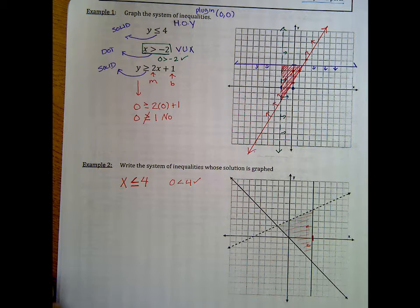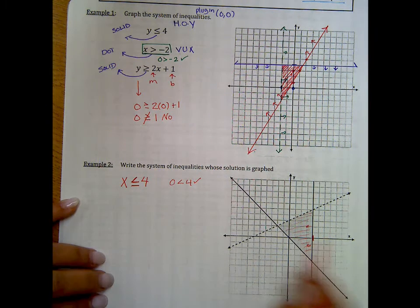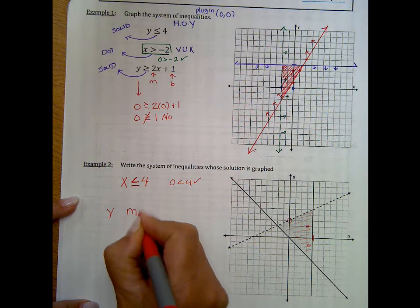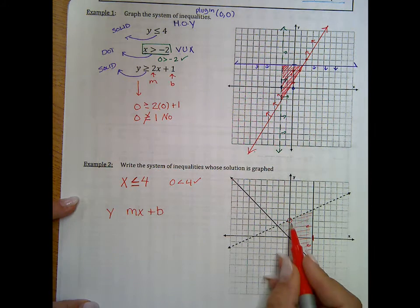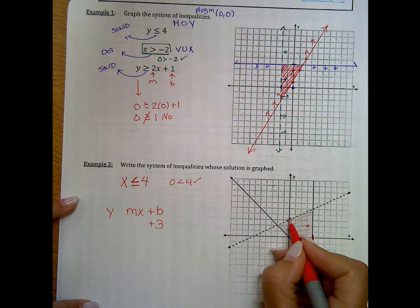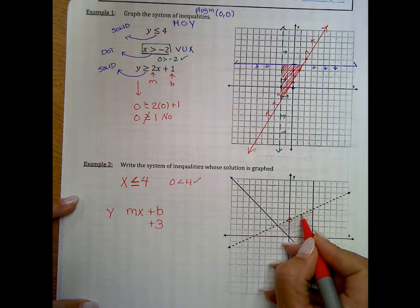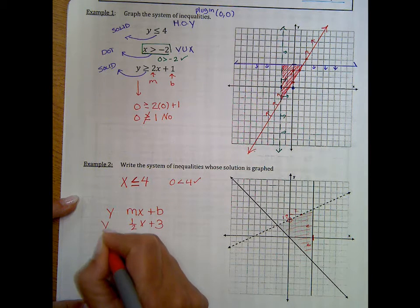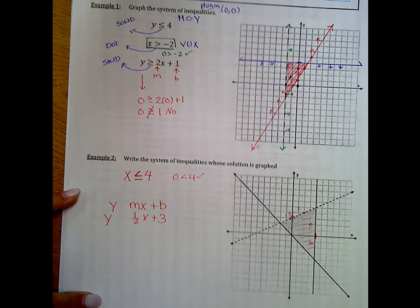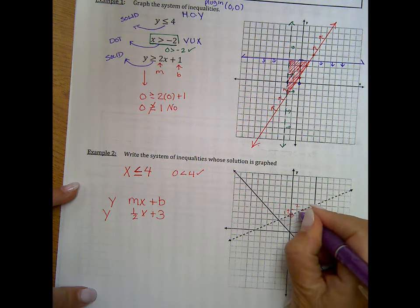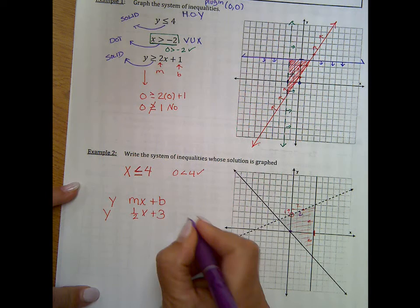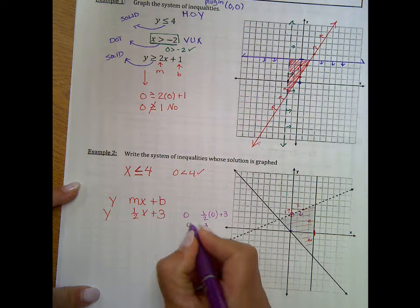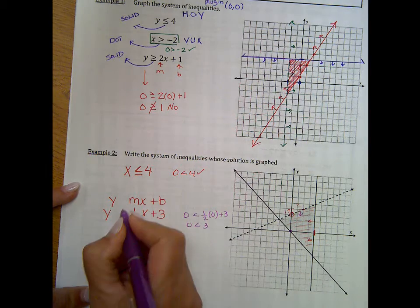Now let's look at this dotted line. The dotted line isn't going to have an equal sign, so it's going to be greater than or less than. It appears that it's crossing at 3, so if we put it in y = mx + b form, my b is 3. I need my slope — it looks like another good point gives me rise 1, run 2, so my slope is 1/2. So there's my line: y = ½x + 3, but not equal to. I need to see if it's greater than or less than. I can plug in (0, 0): 0 compared to ½ times 0 plus 3 — this is 3. 0 is less than 3, so I'm going to make this a less than expression.